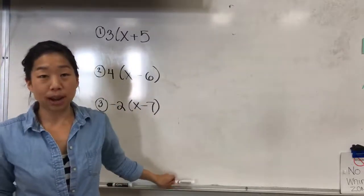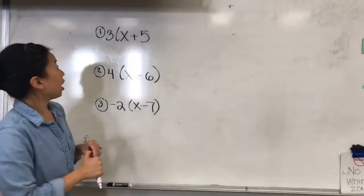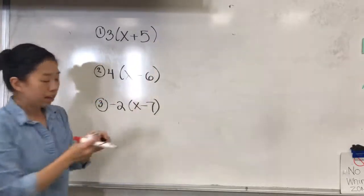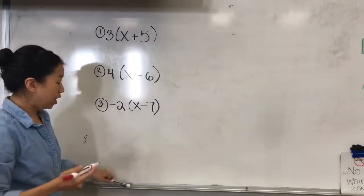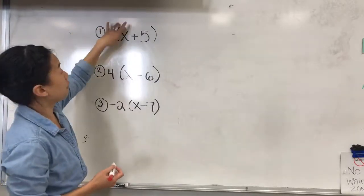So what the heck do I mean by rainbow? So I have three examples up here. Now I tell my students that when we distribute we rainbow the outside number with the first term.